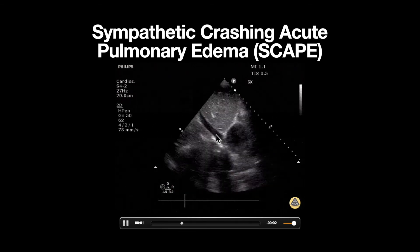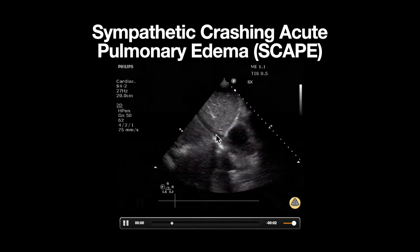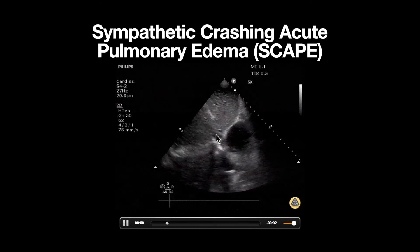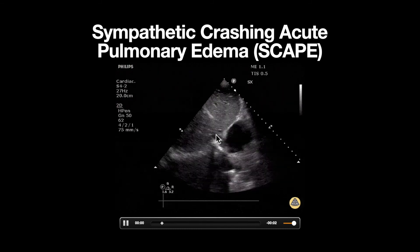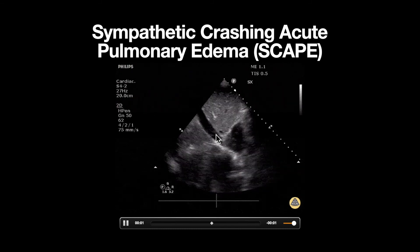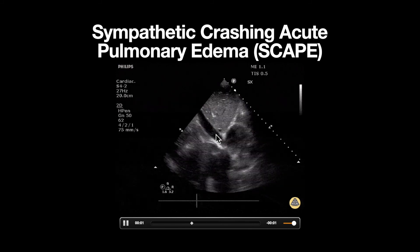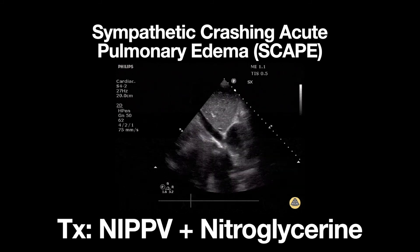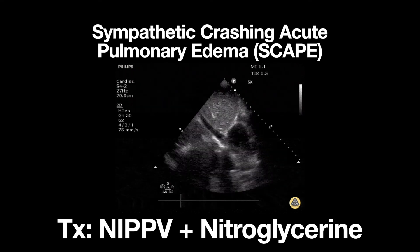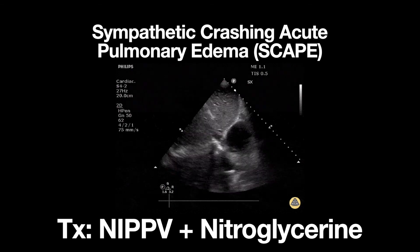It's important to point out the diagnosis of SCAPE compared to decompensated heart failure. In decompensated heart failure, there is overall volume overload as well as fluid accumulation. However, in SCAPE, the acute pulmonary edema is due to rapid fluid redistribution from heart failure and increased systemic vascular resistance. In cases of SCAPE, the focus should be on non-invasive positive pressure ventilation and nitroglycerin, as opposed to diuresis.